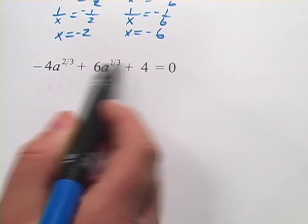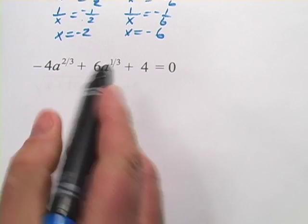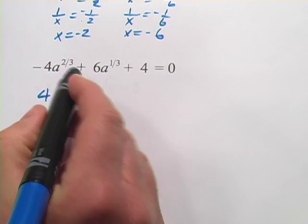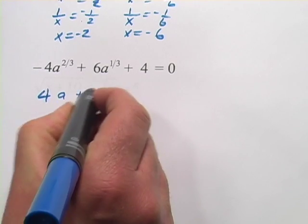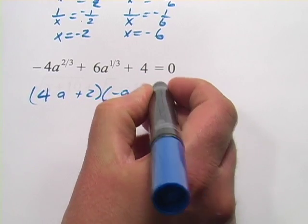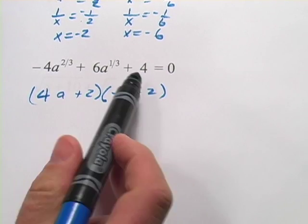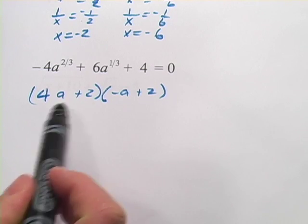Again, I would encourage you just to go about solving this as if this were a normal quadratic by trying to factor. And I think if you did that, if this was a normal quadratic, you'd come up with 4a plus 2 and negative a plus 2. Let's see, does that work? Yeah, you're going to have 8 minus 2 to get the 6 in the middle and it multiplies to 2.